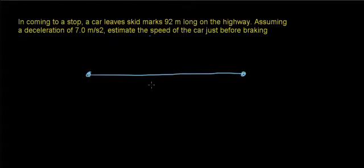In this problem, you're going to see how police can come up with an estimate of how fast a driver was traveling before they locked up their brakes — for example, during a car accident. The police are going to measure some distance. In this case, it's going to be the length of the skid marks that a driver leaves, and that distance is 92 meters.